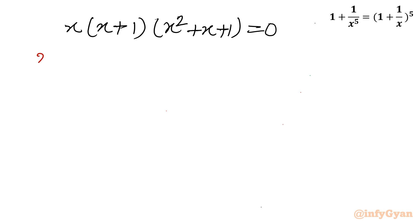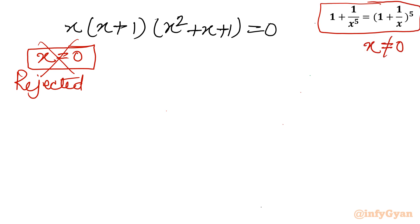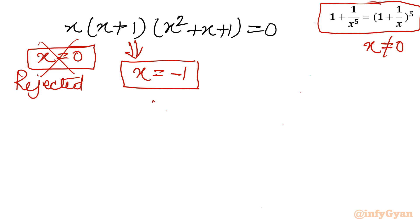Now solving each factor: from x = 0, this solution is rejected as per our domain condition since the denominator cannot be 0. From x + 1 = 0 we get x = −1, which is an accepted solution. The third factor gives the quadratic equation x² + x + 1 = 0, which we solve using the quadratic formula.